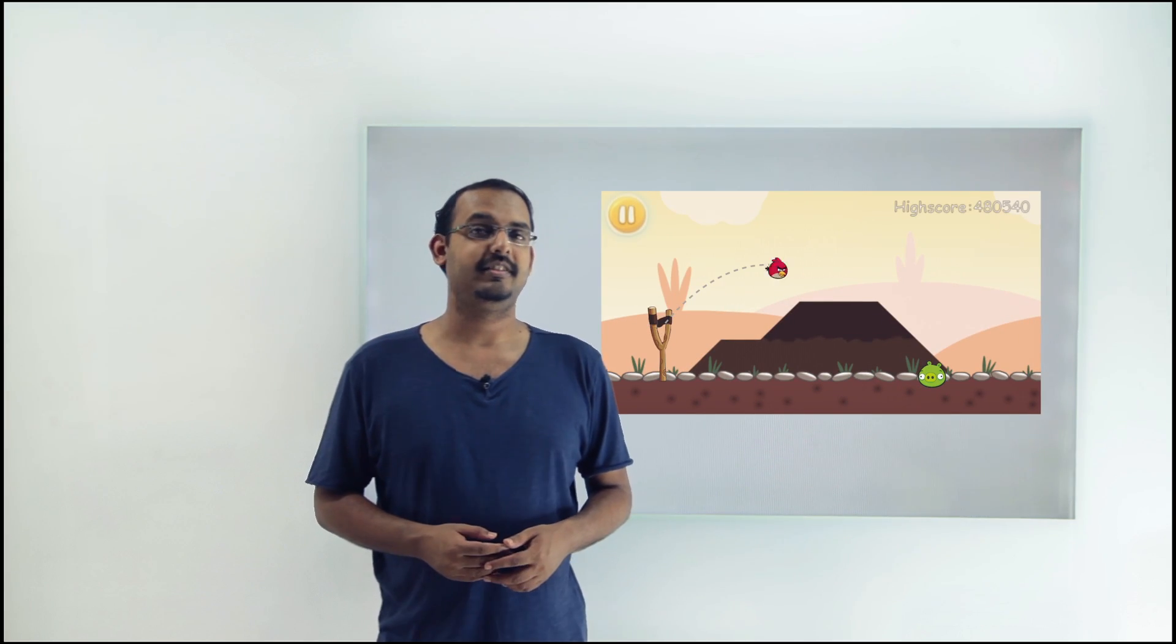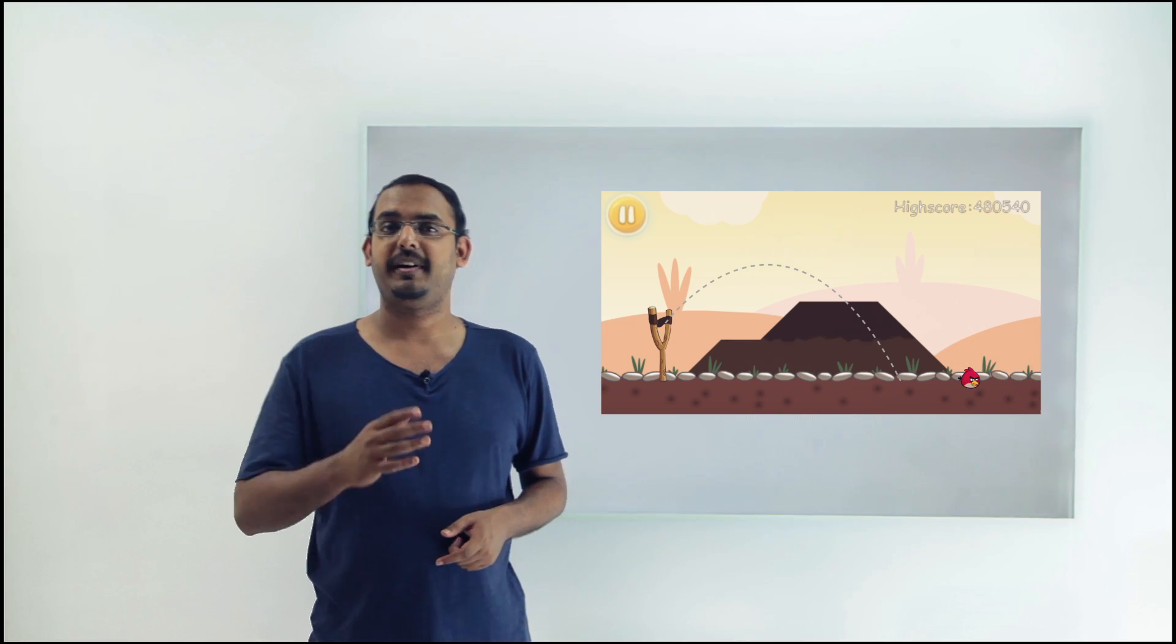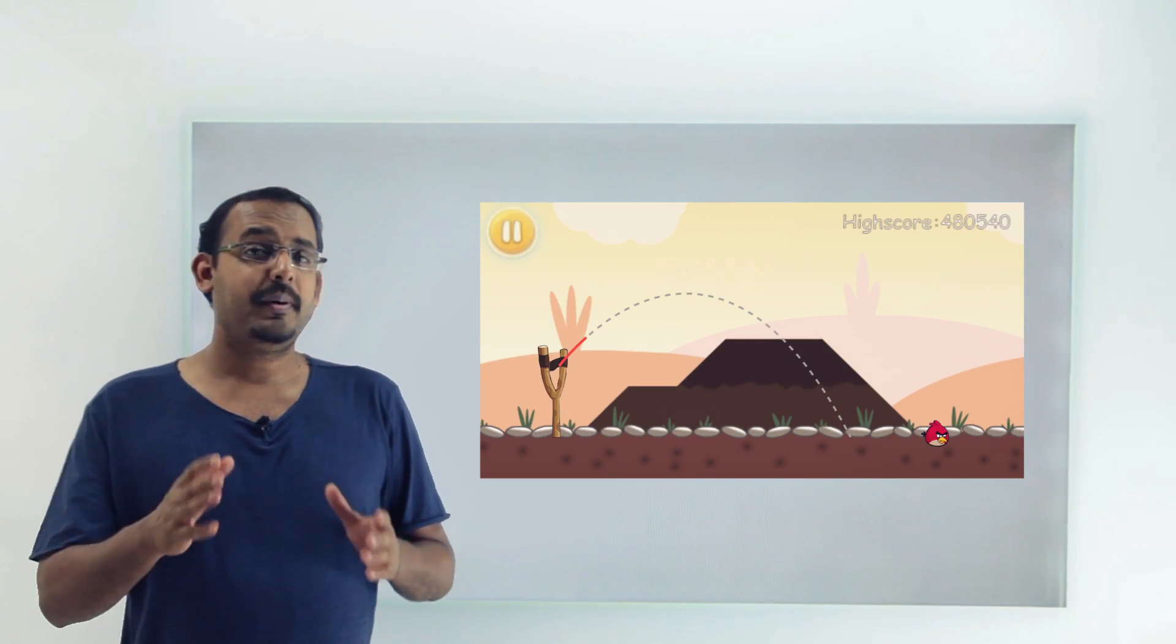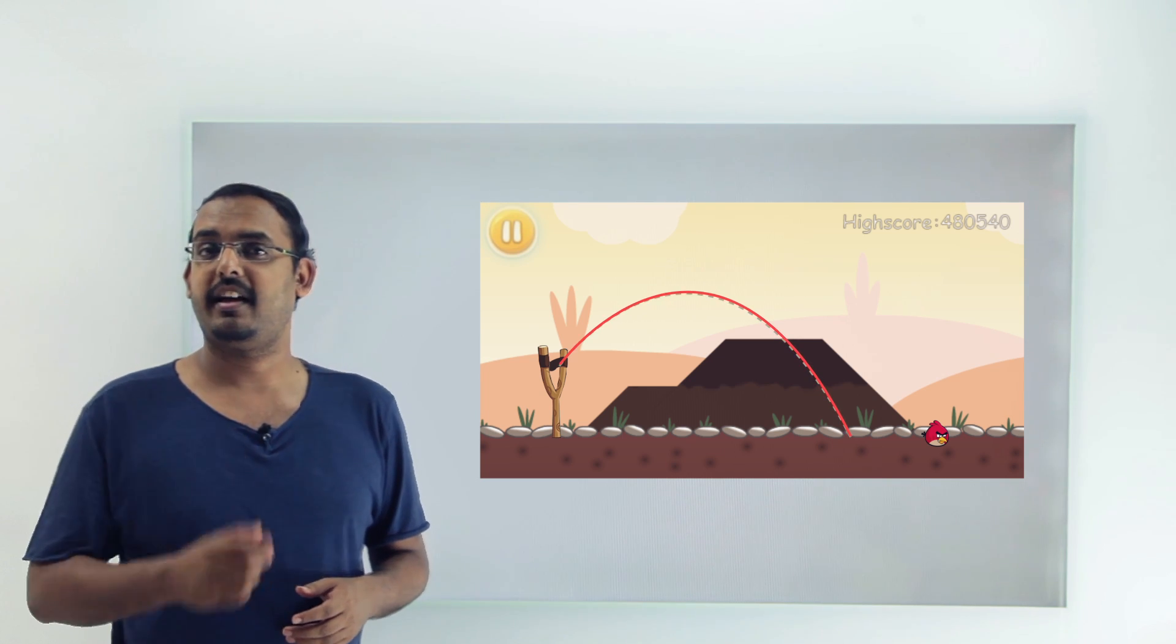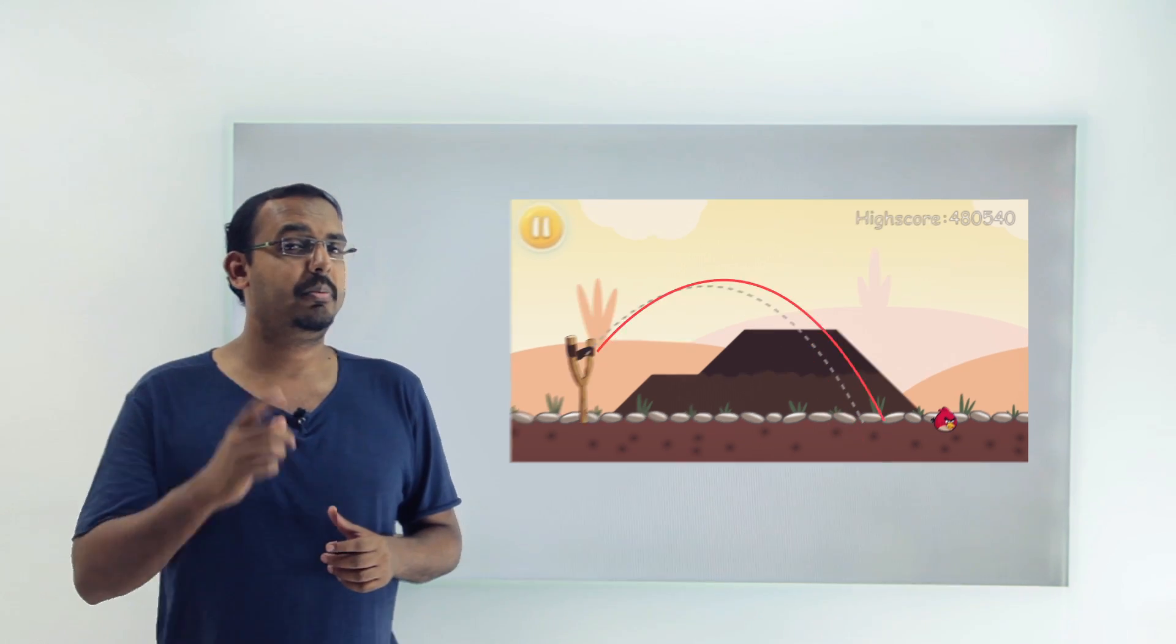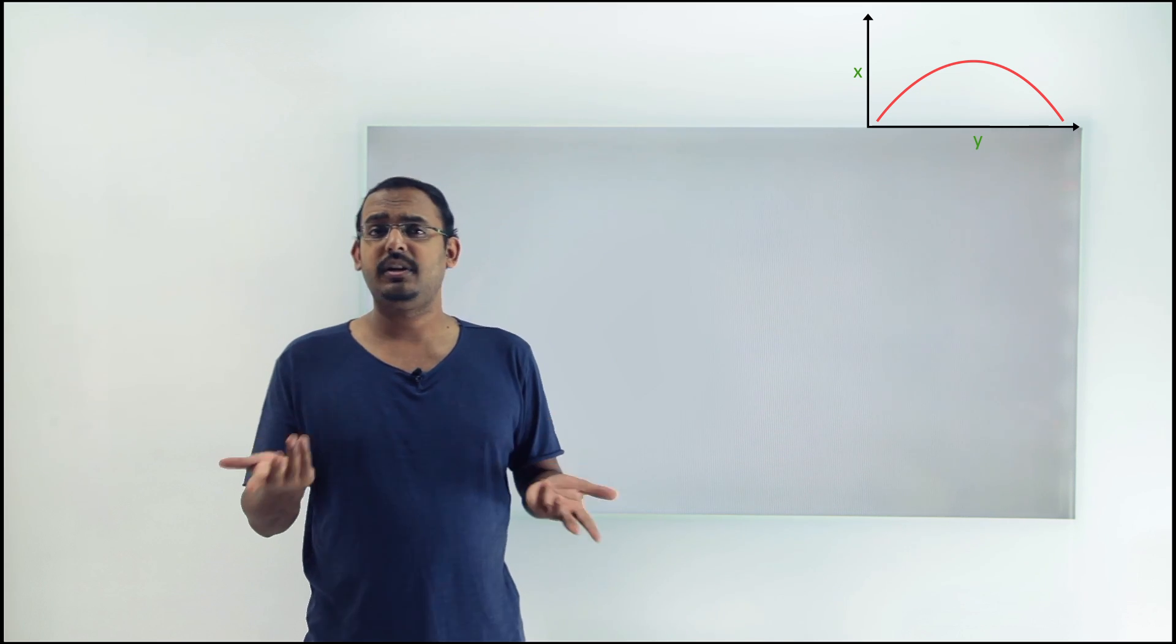For instance, a lot of you might have played the game of Angry Birds. As you might already know, it is one of the most successful games on mobile phones. If you pay attention to the path of the bird as it flies away to destroy the pig castles, you will see a shape emerging out of it. Have you seen this shape elsewhere? Are you familiar with this shape at all?